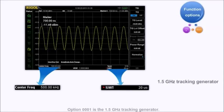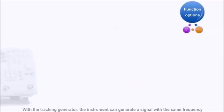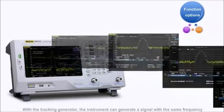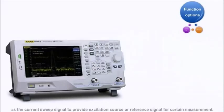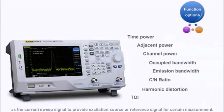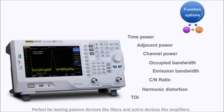Option one is the 1.5 GHz tracking generator. With the tracking generator, the instrument can generate a signal with the same frequency as the current sweep signal to provide excitation source or reference signals for certain measurements. This is perfect for testing passive devices like filters and active devices like amplifiers.